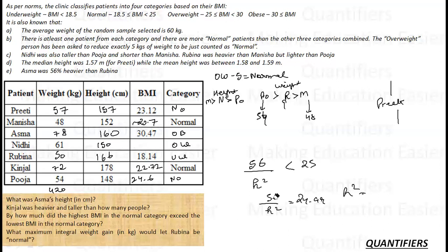And now her current BMI can be calculated as 61 upon 150 square, 2.25, that will be 27.1. This completes my chart and now I'll look at the questions.